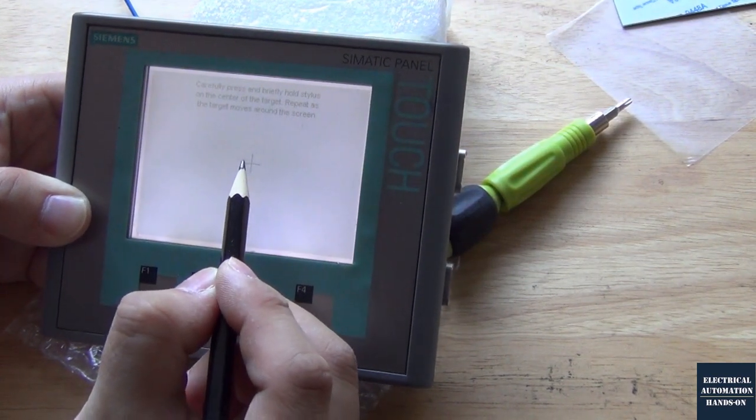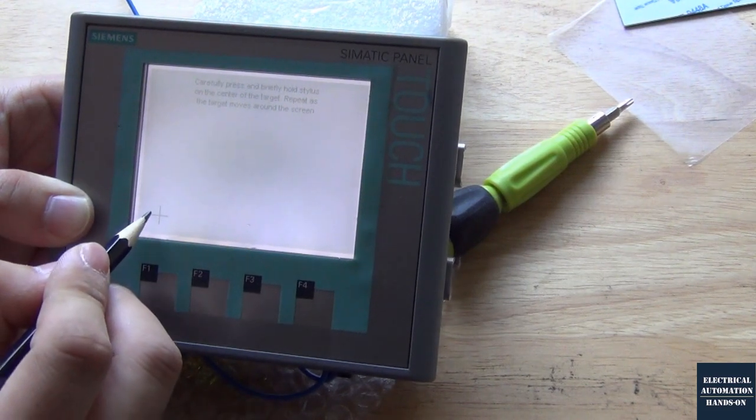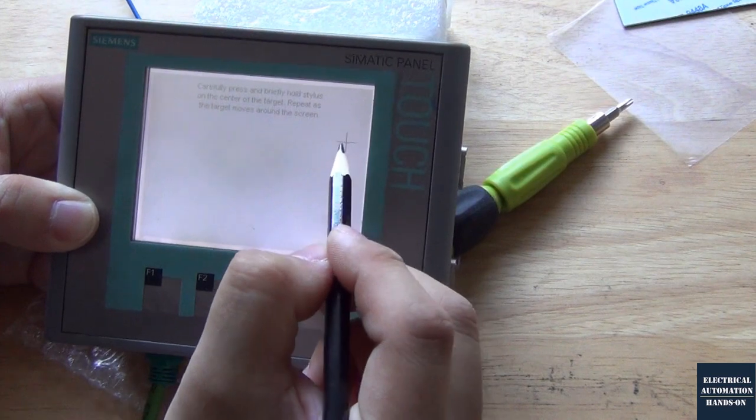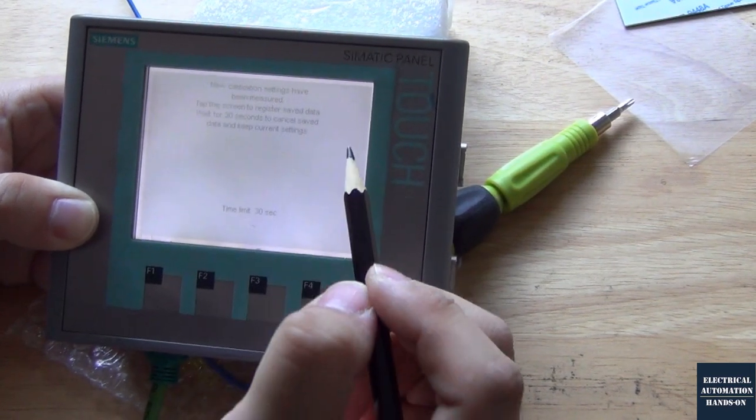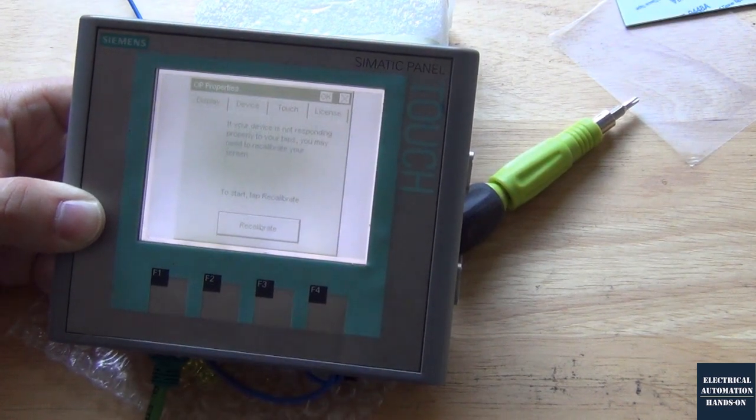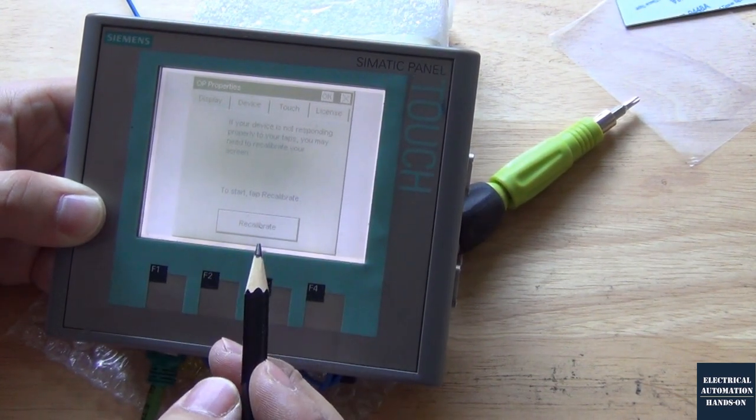And make sure we click the center of that cross. Until here, we touch the screen. That is a confirmation. Now we recalibrate this touch screen.